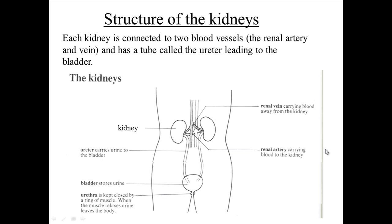Now we're going to look at the structure of the kidneys. As you can see, each kidney is connected to two blood vessels. You've got the renal vein, which carries blood away from the kidney, and you have the renal artery, which carries blood towards the kidney. You've also got the ureter, and that is where the urine is transported out towards the bladder.